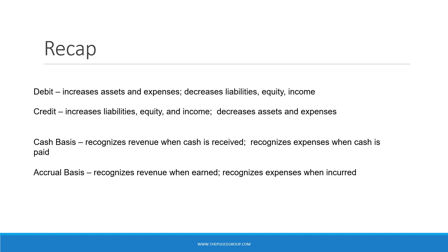To recap: debits and credits are key to double-entry accounting. Debits increase assets and expenses while decreasing liabilities and equity. Credits increase liabilities, equity, and income, and decrease assets and expenses. The cash basis of accounting recognizes revenue when cash is received and recognizes expenses when cash is paid. The accrual basis recognizes revenue when earned and expenses when incurred. That about wraps up our discussion today on debits and credits and the cash versus accrual basis of accounting.